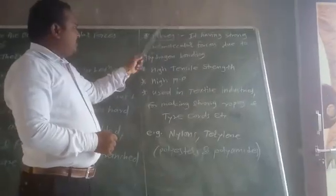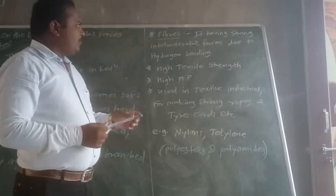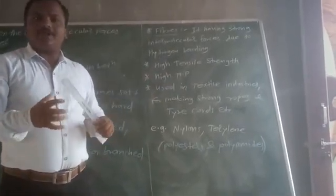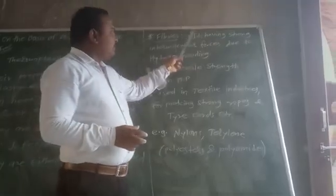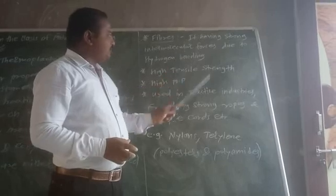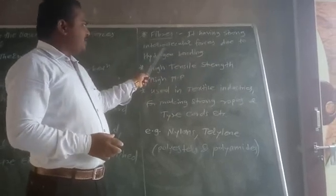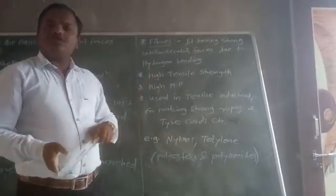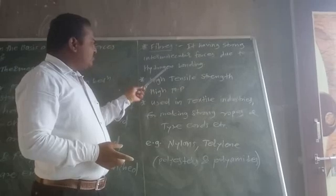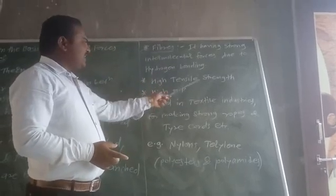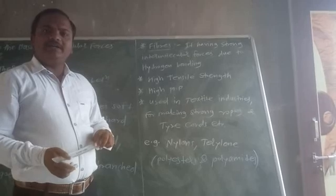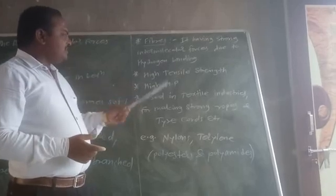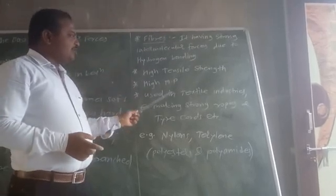The next type is fiber. Fibers have strong intermolecular forces due to hydrogen bonding. Due to the presence of hydrogen bonding, their tensile strength is very high and they show a higher melting point.